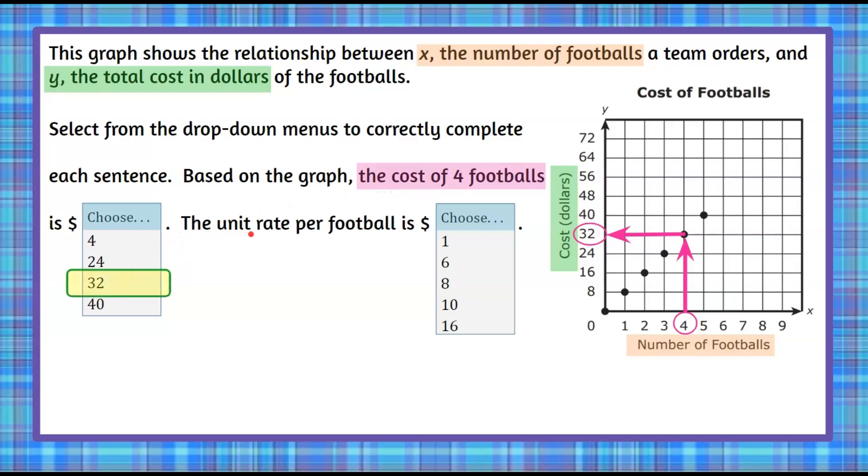Now we want to find the unit rate per football. So the unit rate is how much it costs for one football. So we're going to go over to one football on our x-axis, go up to our data point and then over to our cost, and we find out that the cost of one football is $8. We come over and we're going to choose $8.